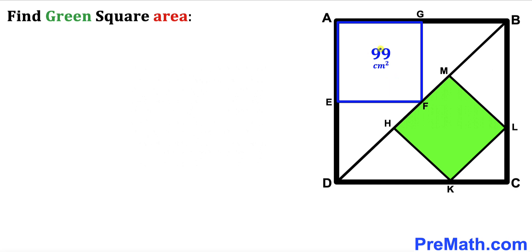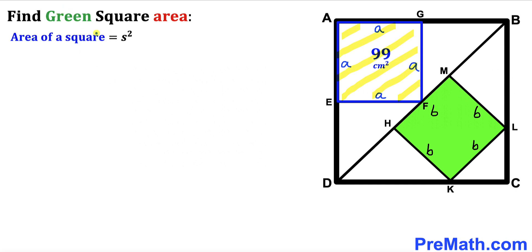I'm going to label its side length. Since all sides are equal, each side is lowercase a. Now let's focus on the green shaded square — all its sides are equal as well, so I'll label each side as lowercase b. Recalling the area formula: area = s². For the blue square AEFG with side a, the area has been given as 99.